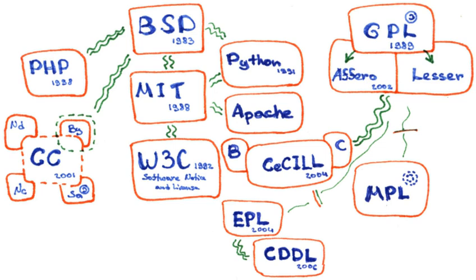These rights were codified by different groups and organizations for different domains in free software definition, open source definition, Debian free software guidelines, definition of free cultural works, and the open definition. These definitions were then transformed into licenses using the copyright as legal mechanism.